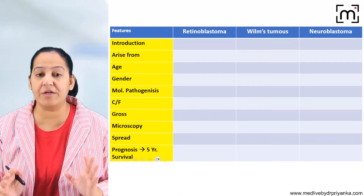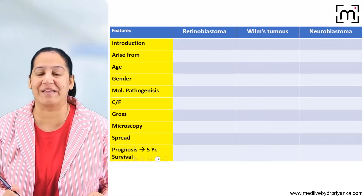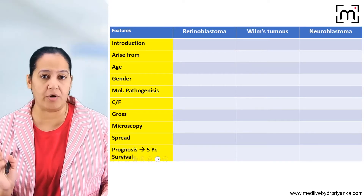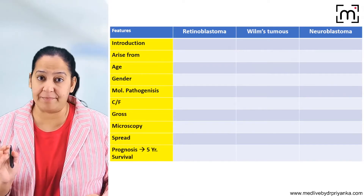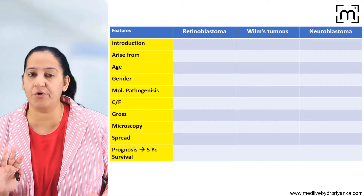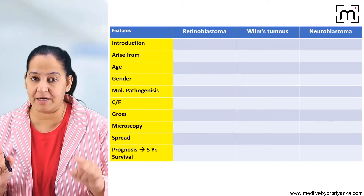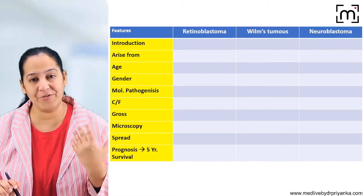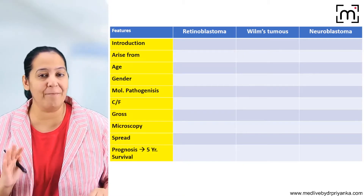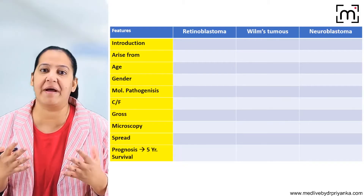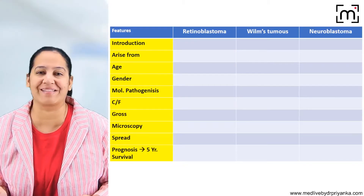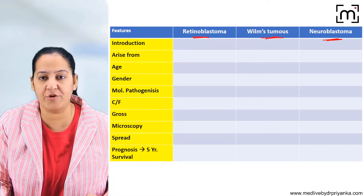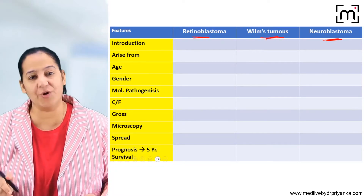I suggest all students to make a comparative table between the three tumours. Please take out your notebooks and start making this table. If you have the hard copy of the book, the table is already given there. If not, make it in your notebook right now. In a comparative manner, you can retain it better and revise easily before exams. We will start with retinoblastoma, then Wilms tumour, then neuroblastoma, and I will fill the table with you correspondingly.